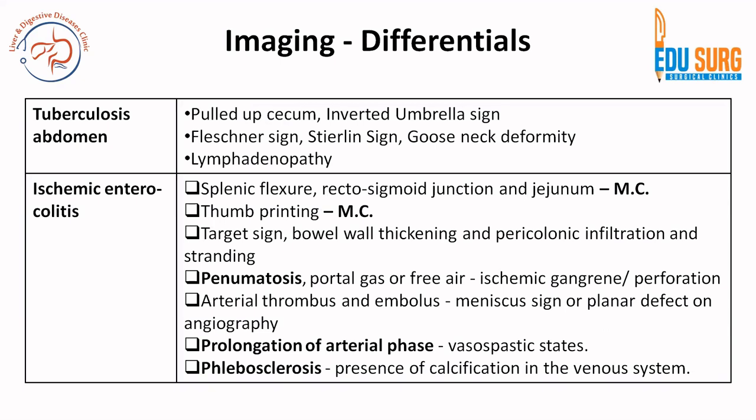Going to tuberculosis — it is a separate topic in itself, but pulled-up cecum is the most common finding in intestinal tuberculosis. Because of the pulled-up cecum appearance, that area has many different names: inverted umbrella sign, Stirling sign, goose neck deformity, or Fleischner sign. Other things commonly seen in intestinal TB include lymphadenopathy.